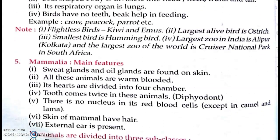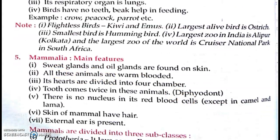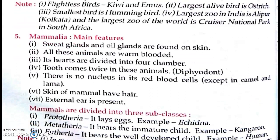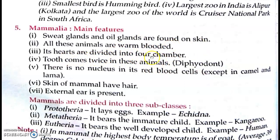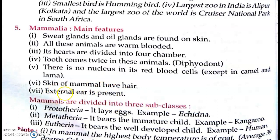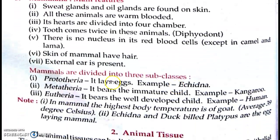Now come to Mammalia — jisme hum log aa jaate hain. Mammalia means mammals. Main features: sweat glands hoti hain, oil glands bhi skin par found hoti hain. All these animals are warm-blooded. Its heart is divided into four chambers. Tooth come twice in these animals — diphyodont bolte hain — pehle milk teeth aate hain, phir permanent teeth. There is no nucleus in their red blood cells, except in camel and llama. Skin of mammals has hair. External ears are present.